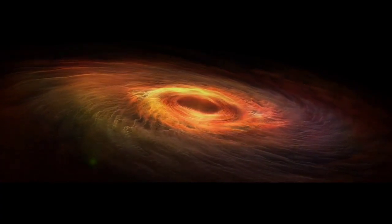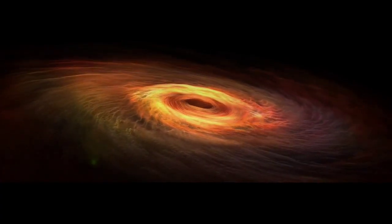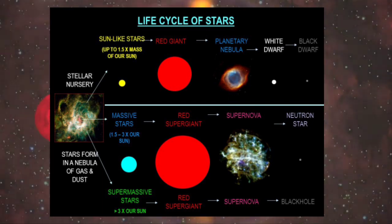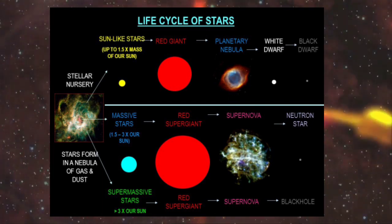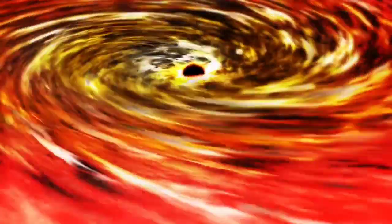बड़े सितारों की मृत्यु Black Hole की ओर ले जाती है क्योंकि एक तारे का gravity तारे के natural pressure को खत्म कर देगा जो इसे अपना आकार बनाये रखने में मदद करता है। जब nuclear reactions का दबाव कम हो जाता है तब gravity हावी हो जाती है और तारे के core को ढहा देती है और तारे की बाहरी परतें अंतरिक्ष में फेंक दी जाती हैं, इस प्रक्रिया को supernova के रूप में भी जाना जाता है। Core का remaining part सिकुड़ जाता है, एक ऐसा स्थान जो अत्यधिक घनत्व और बिना आयतन के होता है।